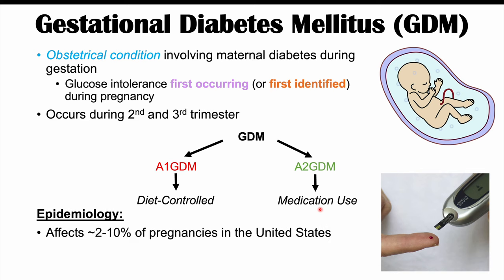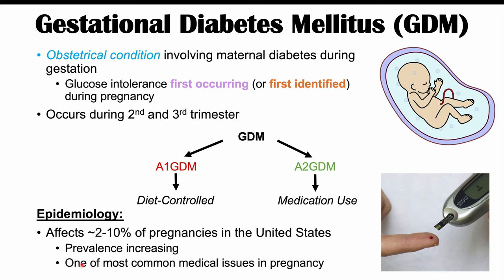Gestational diabetes is actually a very common obstetrical condition. It affects approximately 2 to 10 percent of pregnancies in the United States, and the prevalence is increasing due to increasing prevalences of both obesity and diabetes in general. It is one of the most common medical issues in pregnancy.